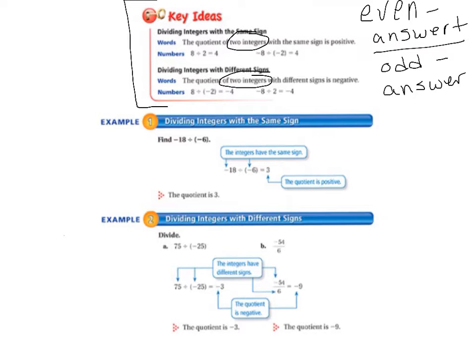So, now let's take a look at example 1. We'll be dividing integers with the same sign. And our problem is to find negative 18 divided by negative 6. So, we divide as normal, 18 divided by 6 equals 3. And since we have two negative signs, the quotient is positive. So, our quotient is 3.